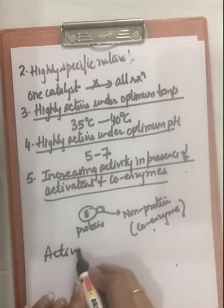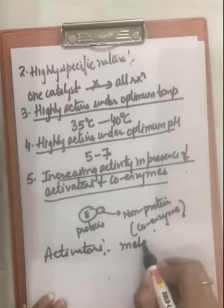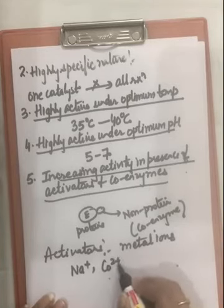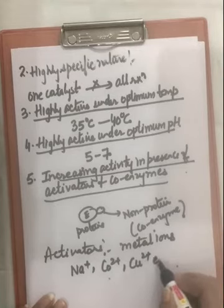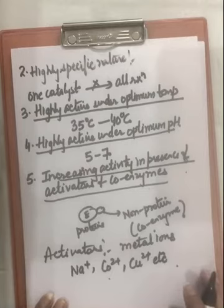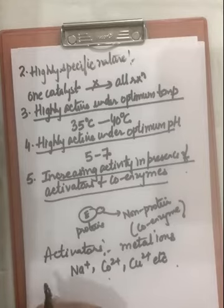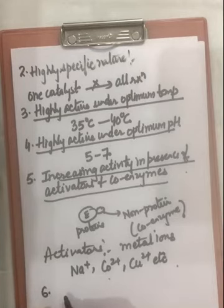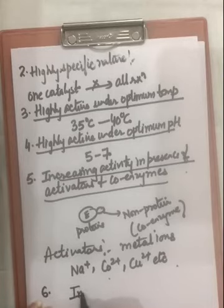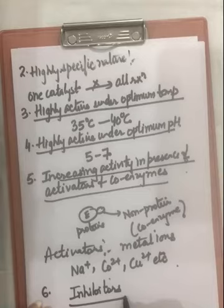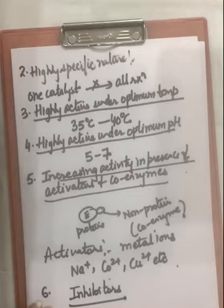Activators are generally metal ions like Na+, Co2+, etc. They are weakly bonded with the enzyme and hence increase the activity of the catalyst by combining with it. There are also inhibitors that decrease the activity of an enzyme — like poisons in the case of catalysts. Some compounds decrease the activity of enzymes and are known as inhibitors.